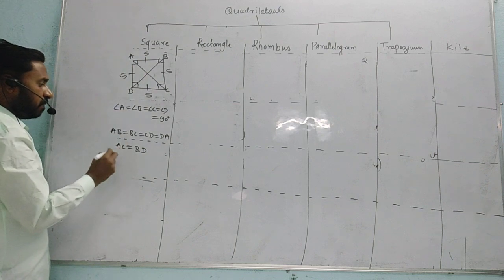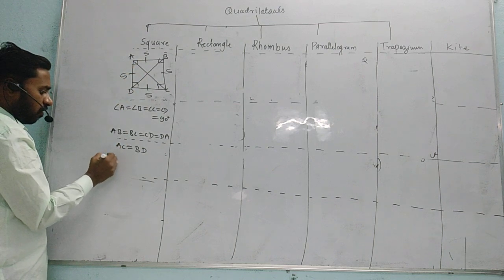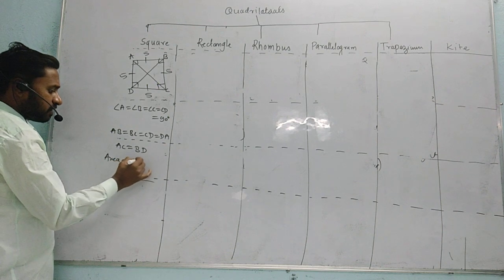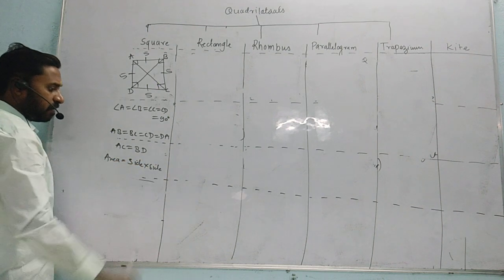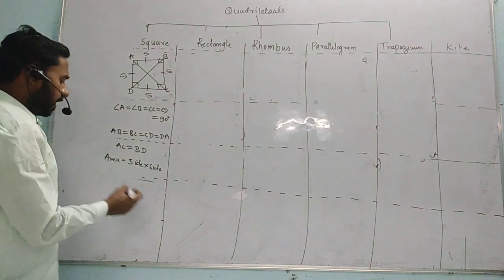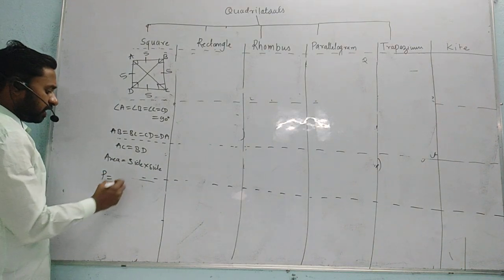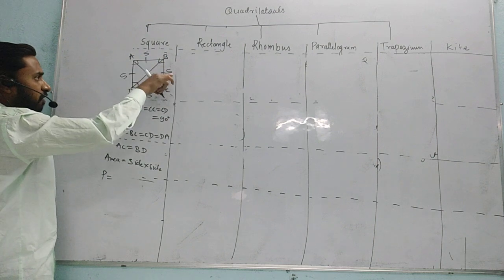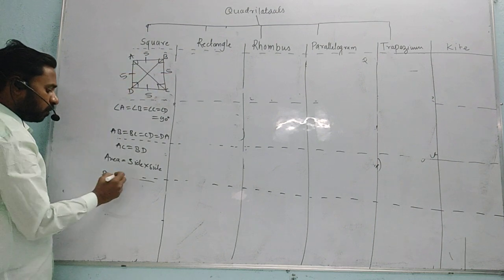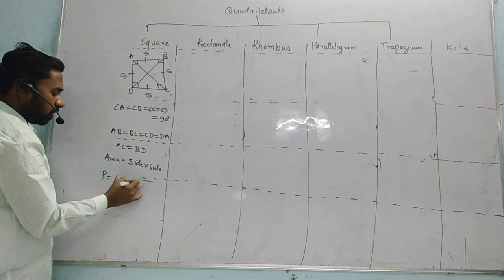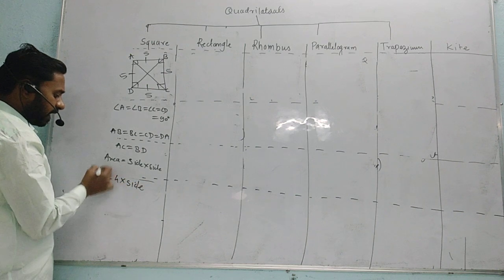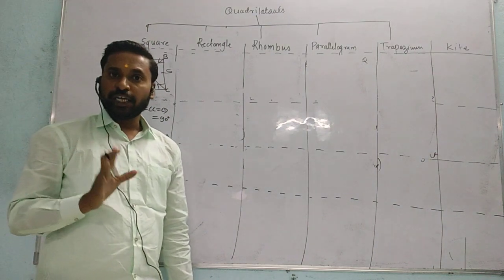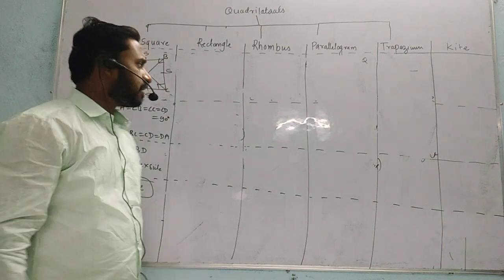AC is equal to BD. Then for area, we calculate side multiplied by side. And perimeter is the sum of all four sides. Since all four sides are equal, we can write perimeter as 4 multiplied by side.